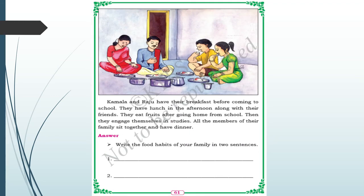Kamala and Raju have their breakfast before coming to school. They have lunch in the afternoon with their friends, eat fruits after coming home, then engage in studies. All family members sit together and have dinner. Breakfast is in the morning, lunch in the afternoon, snacks in the evening, and dinner at night.